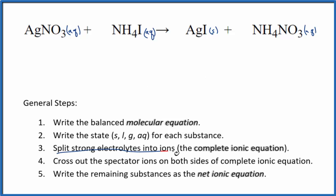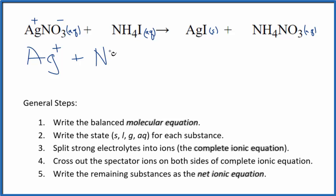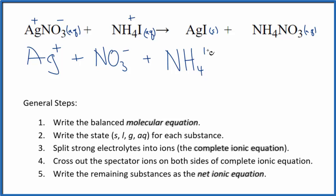After we do that, we can split the strong electrolytes into ions for the complete ionic equation. Silver is always one plus and the whole nitrate ion is one minus — a good one to remember. So we have our silver ion, Ag+, and then our nitrate ion, NO3-. The ammonium ion is one plus the whole thing, so NH4+, and then our iodide ion is one minus, so I-.